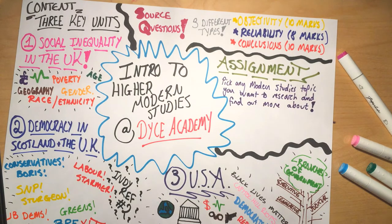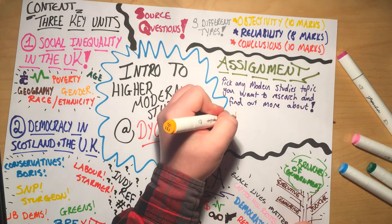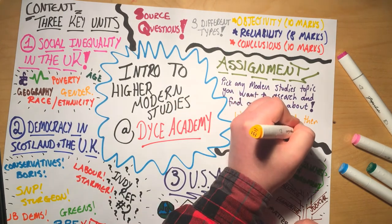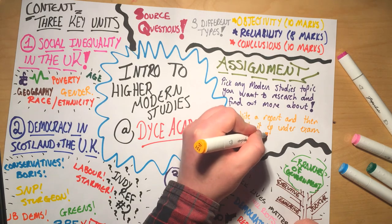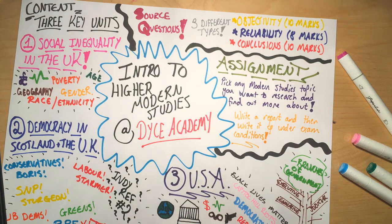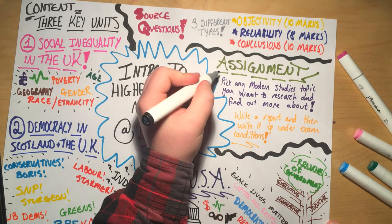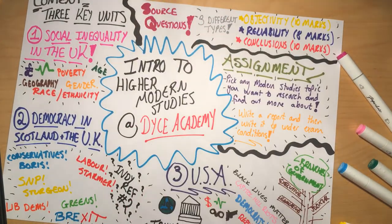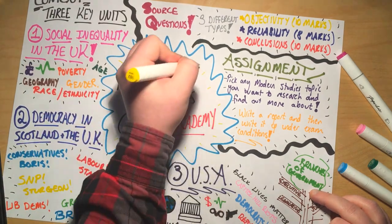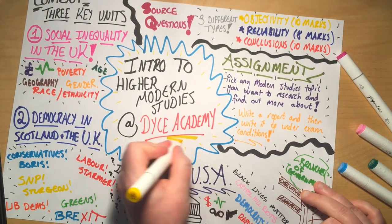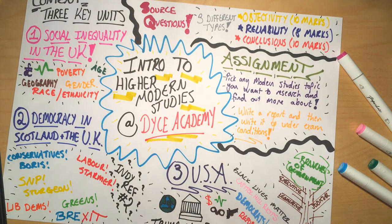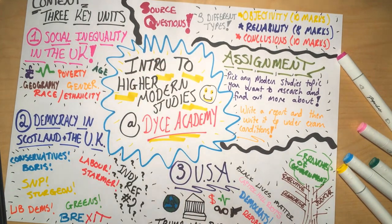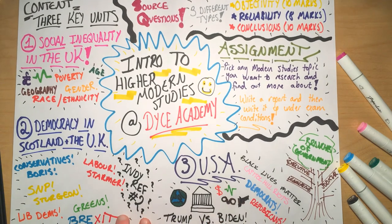So that's the last component of higher modern studies. I hope that gives you a bit of a flavor about what you can expect if you choose to study higher modern studies at DICE. So we've got our three units of content — social inequalities in the UK, democracy in Scotland and the UK, and the USA as a world power — we've got our three source questions, and we've got our assignment. Together that is our course. Lots of room to hear your opinions, to discuss these really important and controversial issues, and to get debate going both in our conversations and in your essay and exam answers.